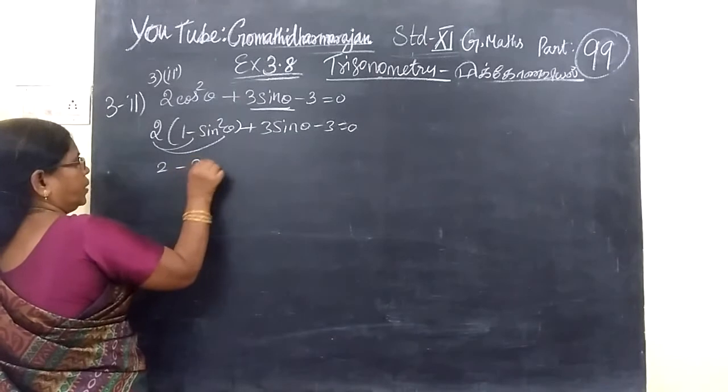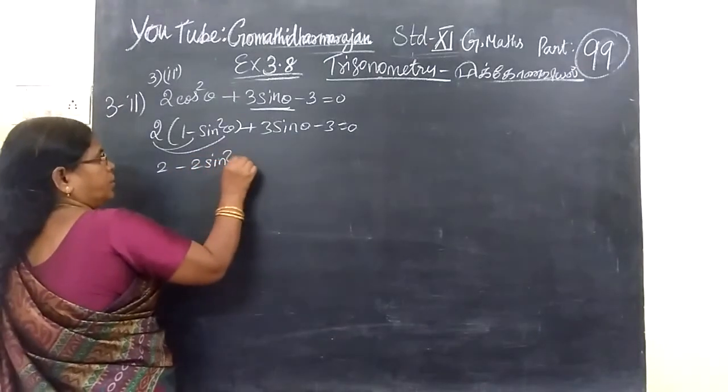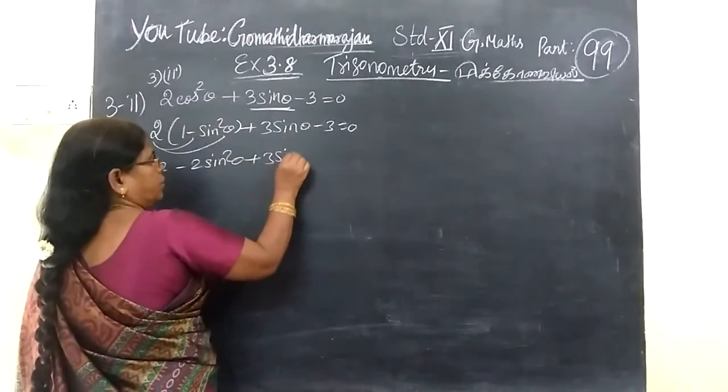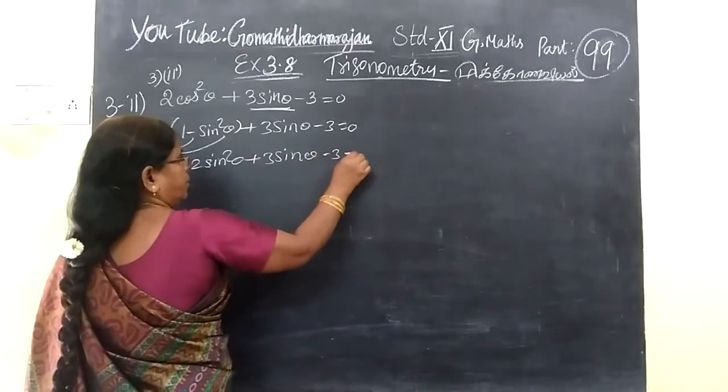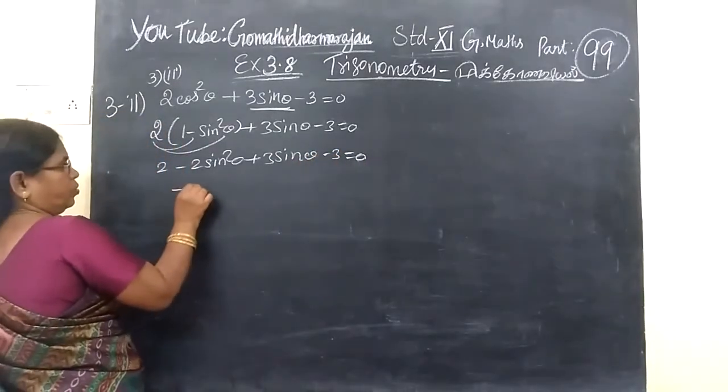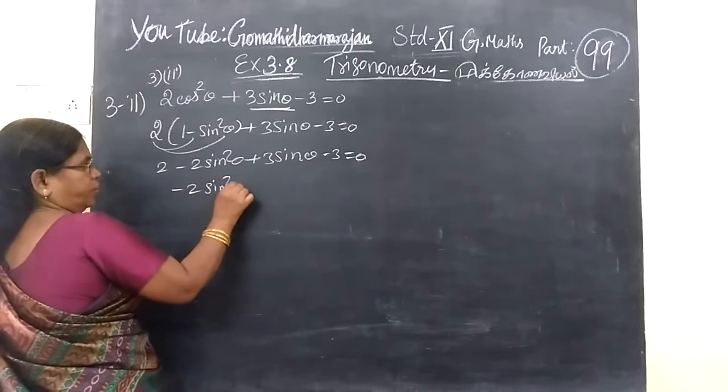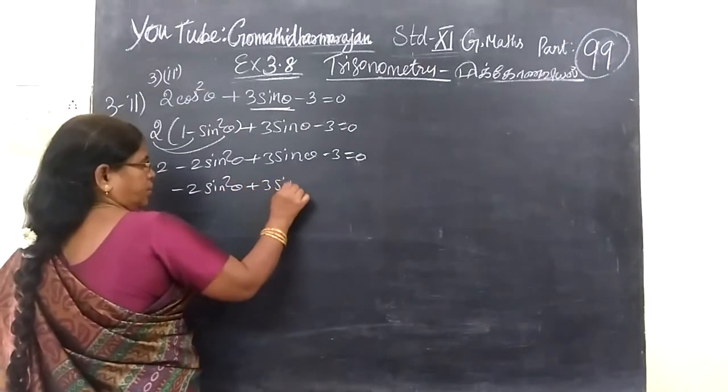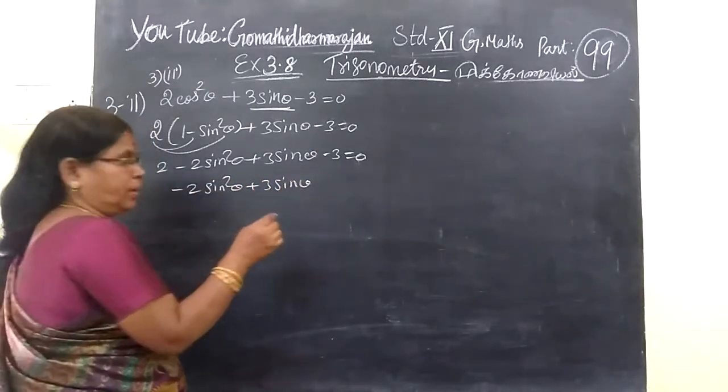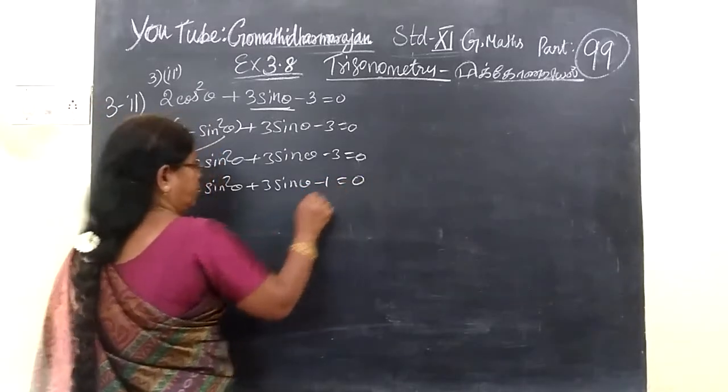Take 2 inside. So 2 minus 2 sin squared theta plus 3 sin theta minus 3 equal to 0. Minus 2 sin squared theta plus 3 sin theta plus 2 minus 3 minus 1 equal to 0.